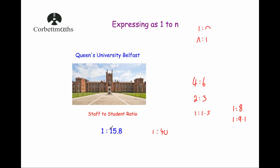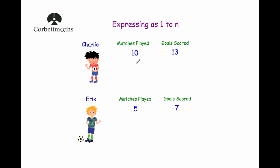This 1 to n format can be very useful for comparing. Here's a scenario: Charlie is a striker who has played 10 football matches and scored 13 goals. Eric is also a striker who has played 5 matches and scored 7 goals. Writing that as a ratio of matches played to goals scored gives 10 to 13 for Charlie and 5 to 7 for Eric.